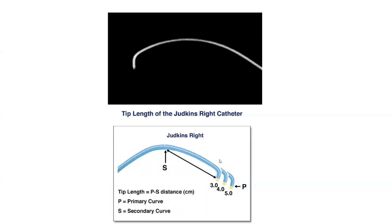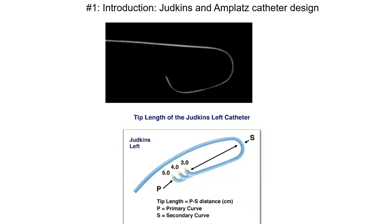This is a Jutkins right catheter, totally different shape, meant to go toward the right coronary artery. It has a primary and secondary curve, a different shape overall. Three, four, five centimeters gives you Jutkins right 3, 4, or 5. In general, for Jutkins right we overwhelmingly use a JR4. With Jutkins left, we use JL4 mostly, but can definitely use 3, 5, 6, or 3.5.